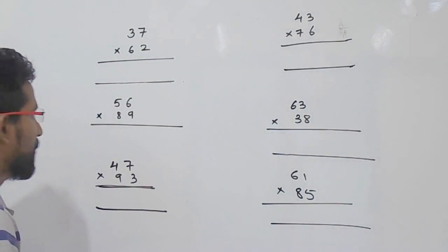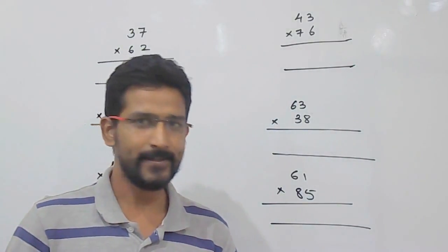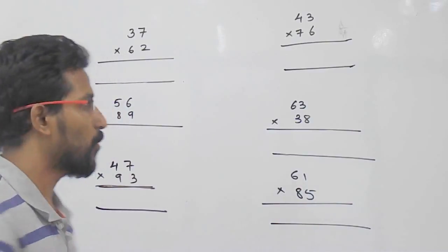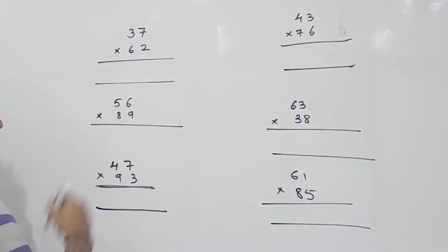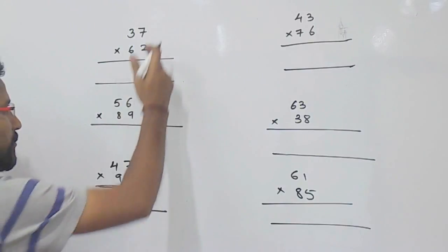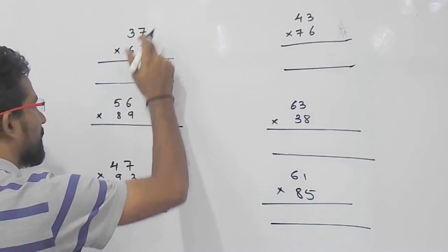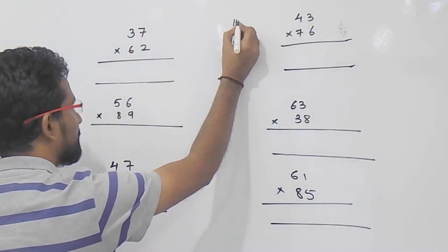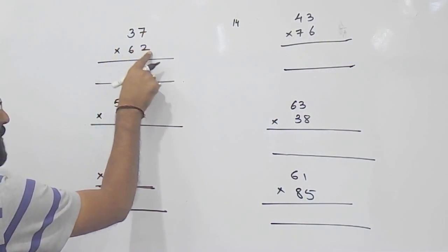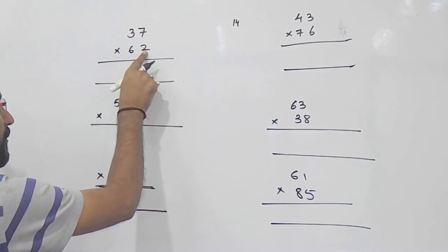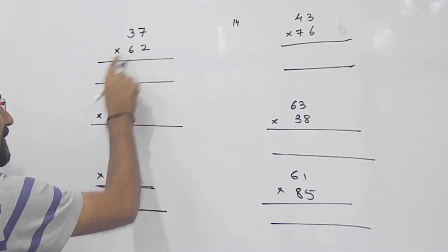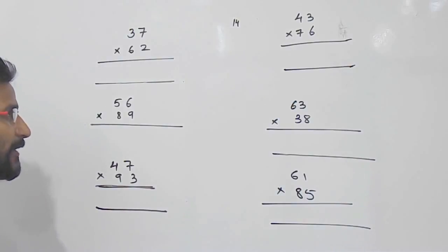For example, you want to multiply 37 into 62. So, what you have to do here is, first multiply the unit place values. So, 7 into 2 that is 14. Then cross multiply the values, 3 into 2 that is 6, 7 into 6 that is 42.